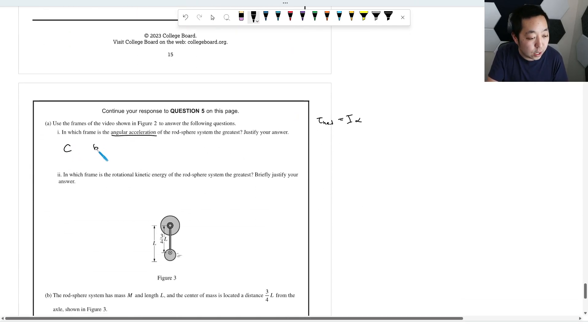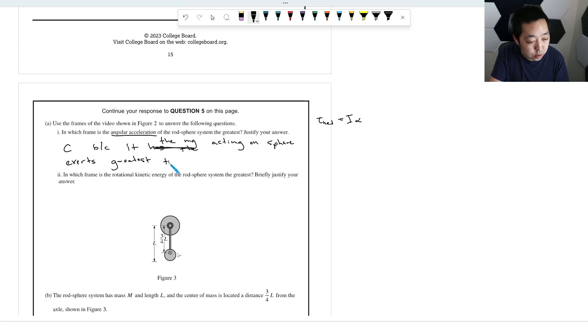These two are going to have a torque of zero. This one's going to have a torque. But ultimately, that's going to be smaller than frame C, where you are going to have the greatest torque. So frame C, because it has the greatest torque, because the gravity, the mg acting on the sphere, exerts the greatest torque, because it is perpendicular to the R vector from axis to the force, to mg. Okay, so it's already perpendicular. It's going to be the greatest torque. You probably just need to say greatest torque. Just make some argument about the greatest torque.